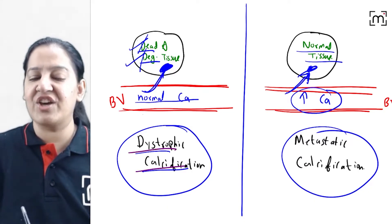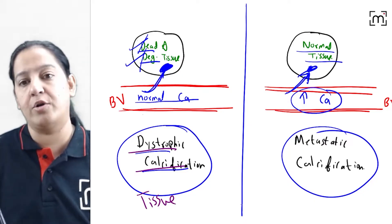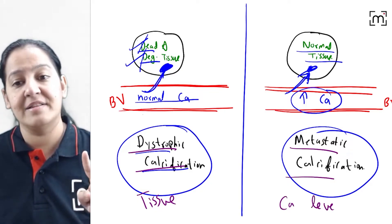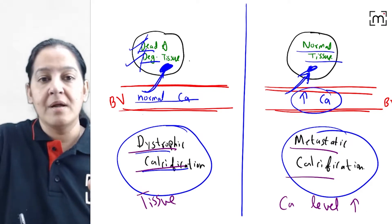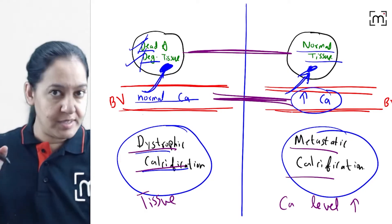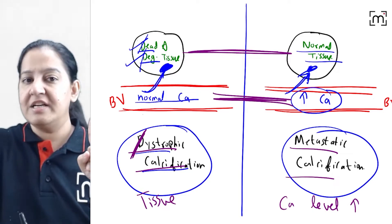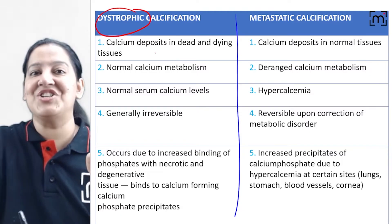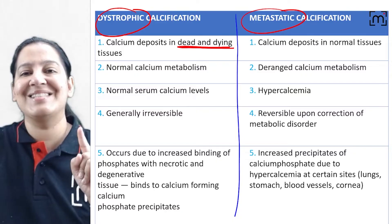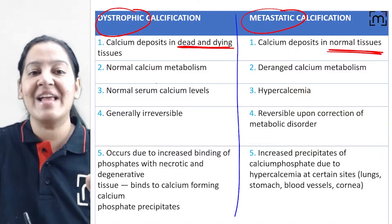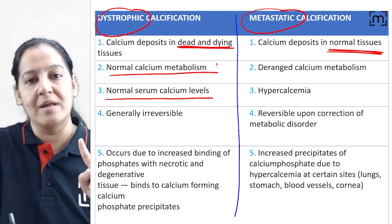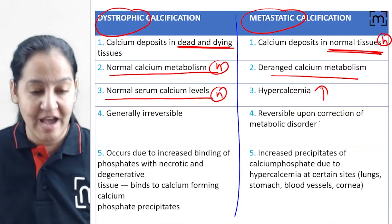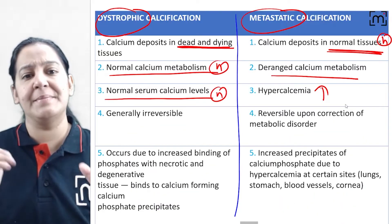In dystrophic calcification, the problem is in the tissue — the tissue is dead and degenerated — but calcium levels in the blood are normal. In metastatic calcification, the problem is not in the tissue; the tissue is healthy. But the calcium level in the blood is elevated, so calcium metabolism is abnormal. Always remember: D for dystrophic, D for dead and degenerated. In dystrophic, calcium metabolism is normal; in metastatic, the tissue is normal but calcium metabolism is deranged, causing hypercalcemia.